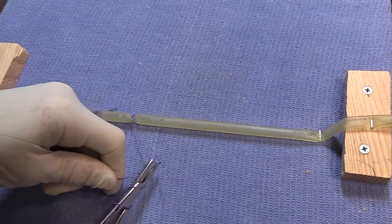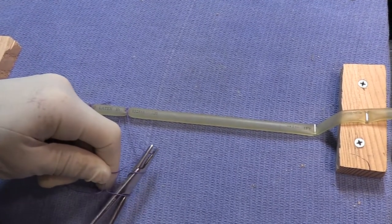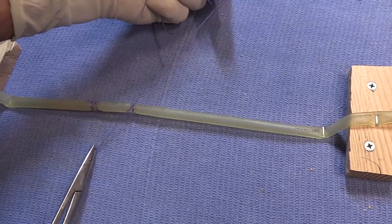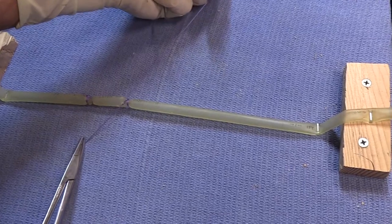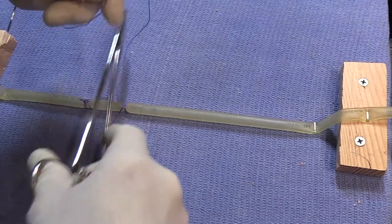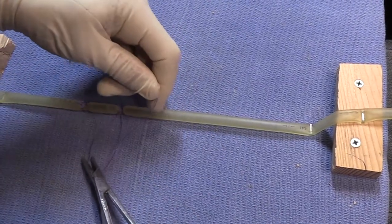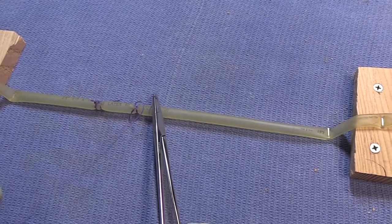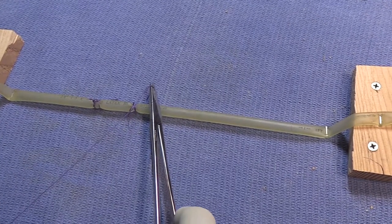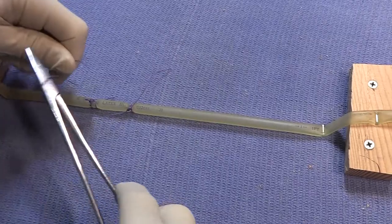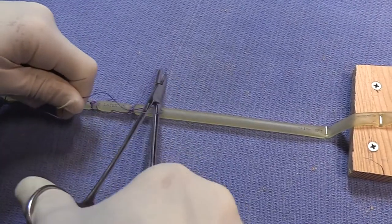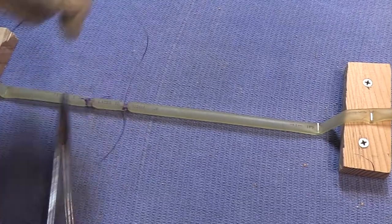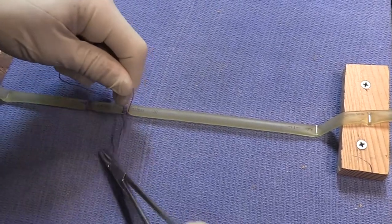One, two, because this is going to be a surgeon's knot. Pull evenly with both hands. Again, pull it really tight. Repeat, not jerking that suture material and loosening the original throw. Put a second knot on there, and then a third and a fourth.